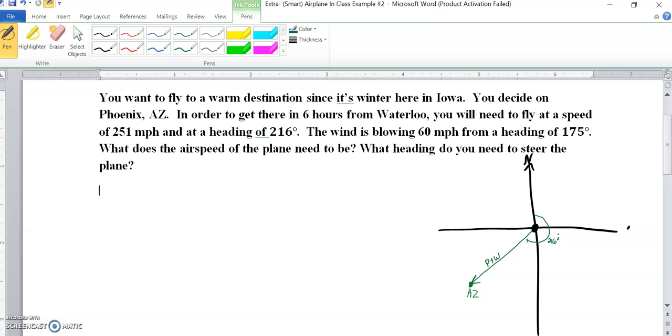It also tells you that in order to get there in six hours, you're flying at 251. So the magnitude is 251 miles an hour. The wind is 60 miles an hour.